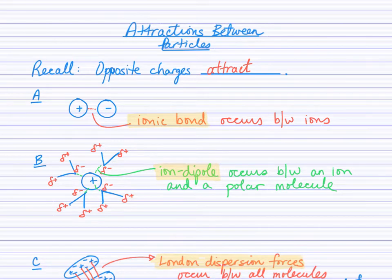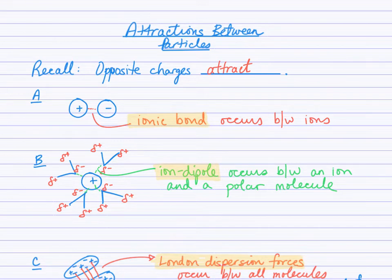In part A, we have an ionic bond that occurs between ions — a distinctly positive ion attracting with a distinctly negative ion — so there is a full or complete charge on each of those particles, and that is a very strong attraction.